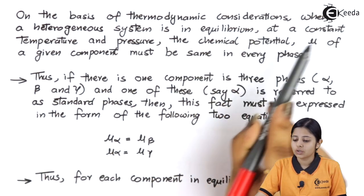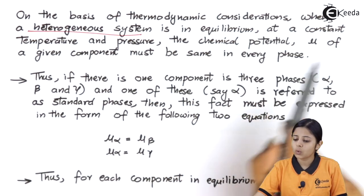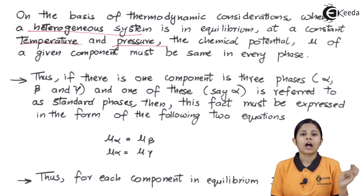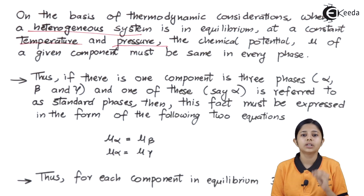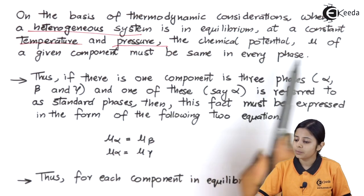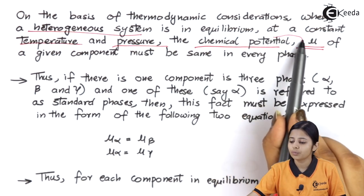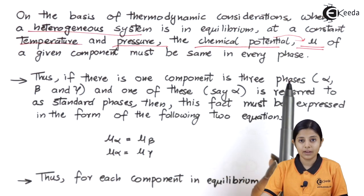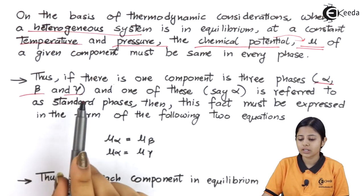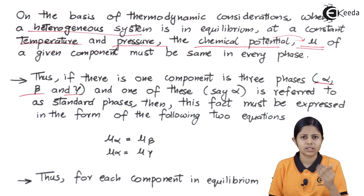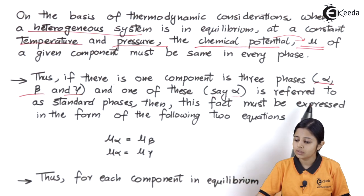On the basis of thermodynamic consideration, when a heterogeneous system is in equilibrium at constant temperature and pressure — meaning two of the three variables (temperature and pressure) have become constant, and the only thing I can vary is the concentration — the chemical potential, denoted as mu, of a given component must be the same in every phase. Thus, if there is one component in three phases — phase alpha, phase beta, and phase gamma — one of these, say alpha, is referred to as the standard phase.